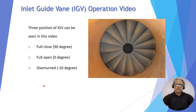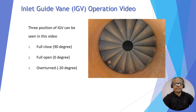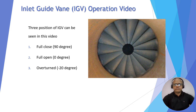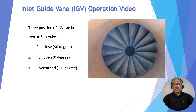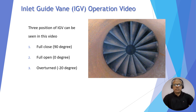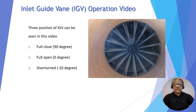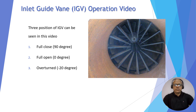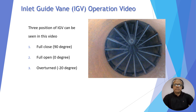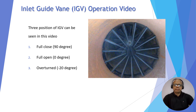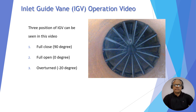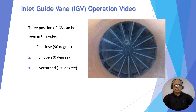Now you will see the actual video of the operation of IGV. Full close is 90 degrees, full open is 0 degrees, and overturned is minus 20 degrees. This is the full close position. Now it starts opening from 90 degrees. It is opening. Now it is fully axial — this is the fully axial, full open position at 0 degrees. Now it is moving towards the overturn position at minus 20 degrees.